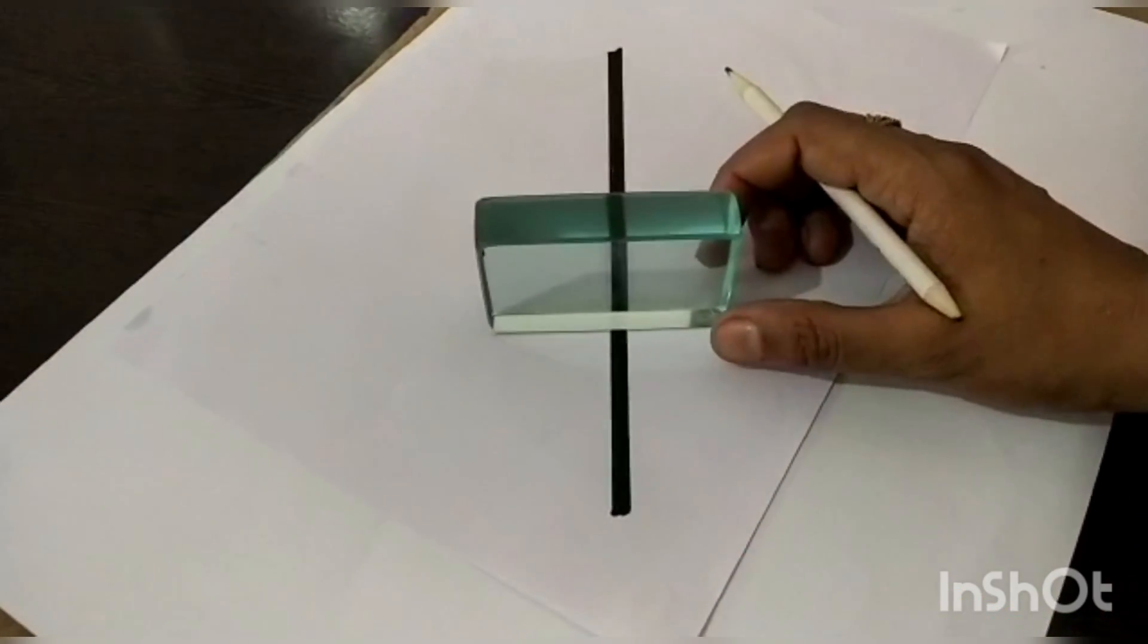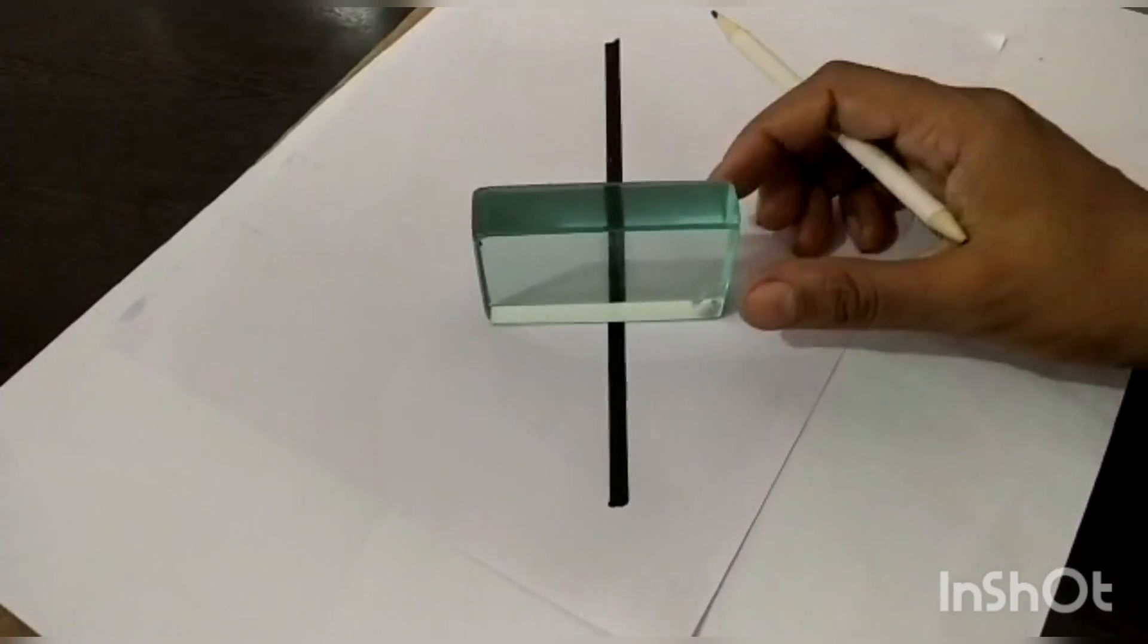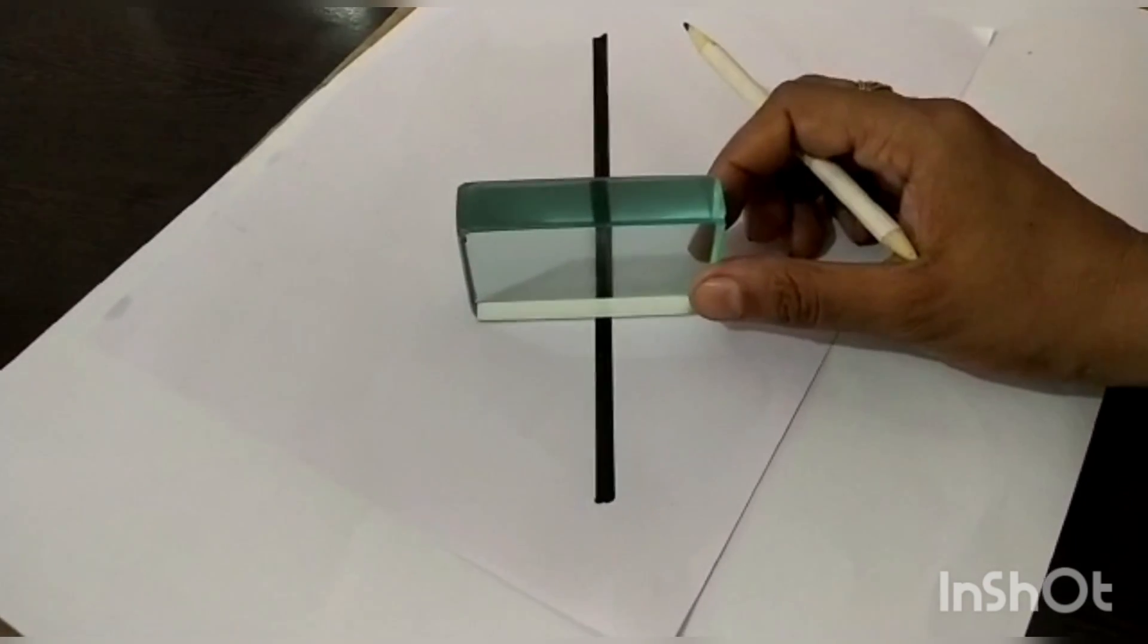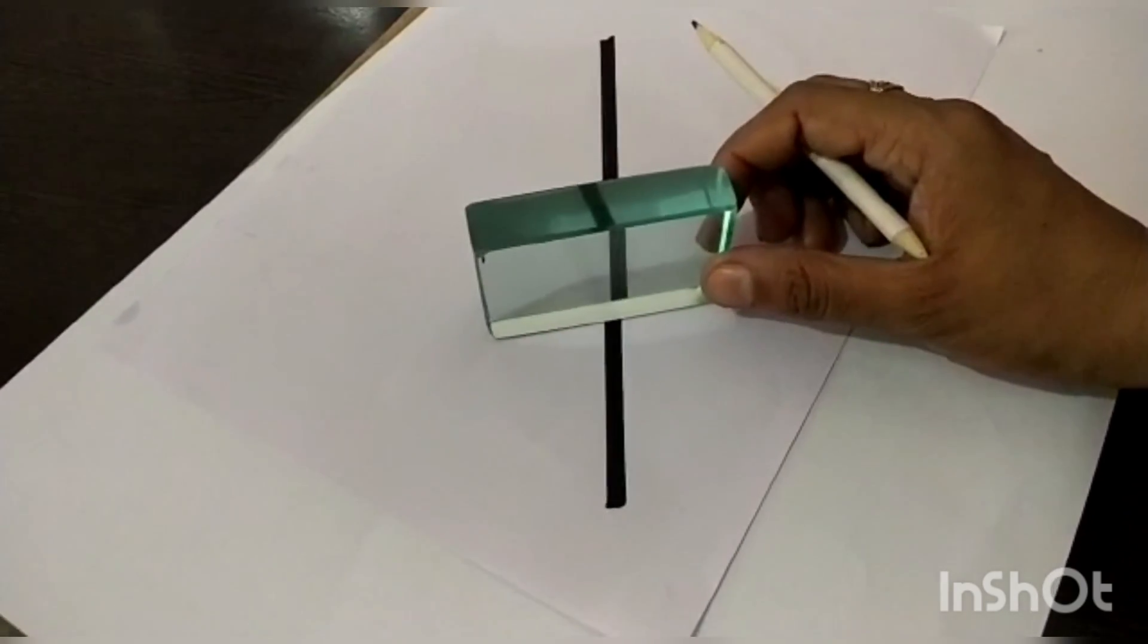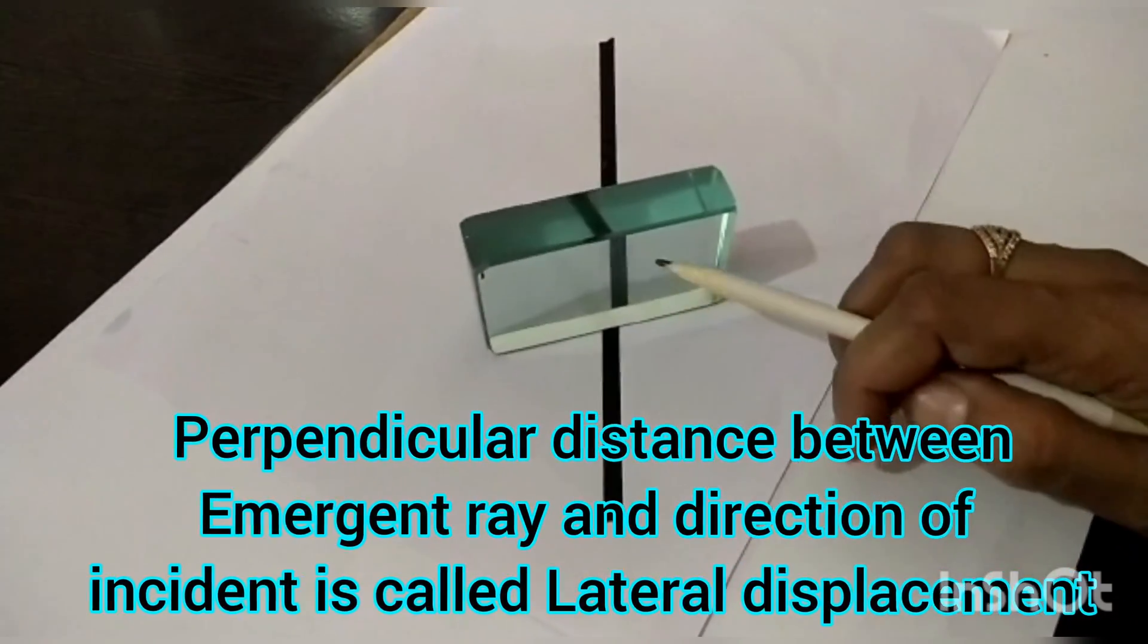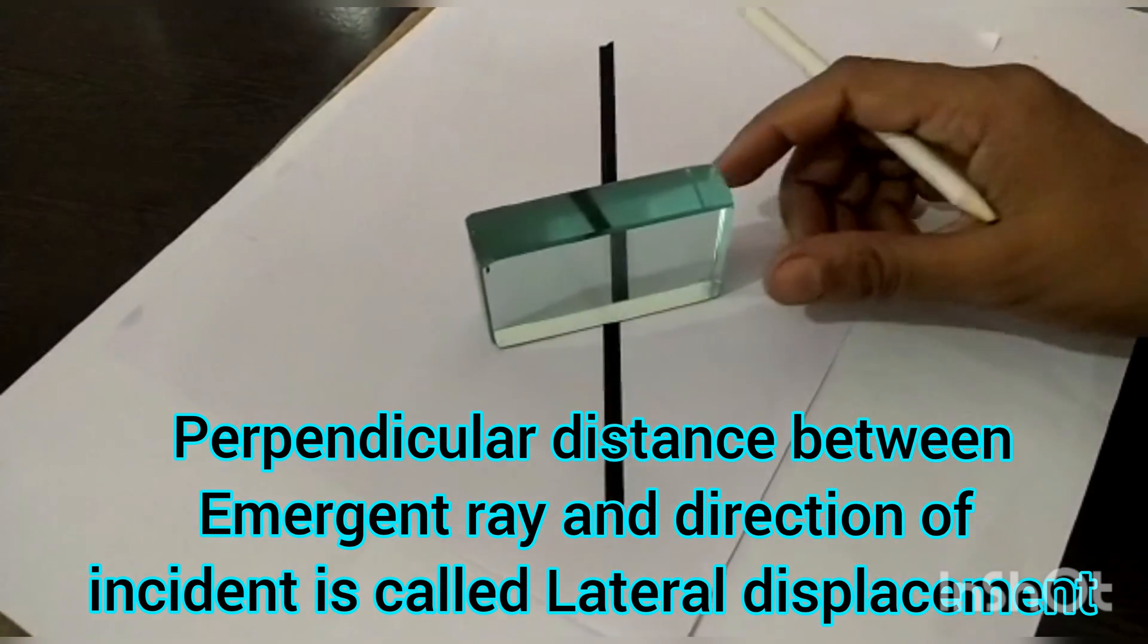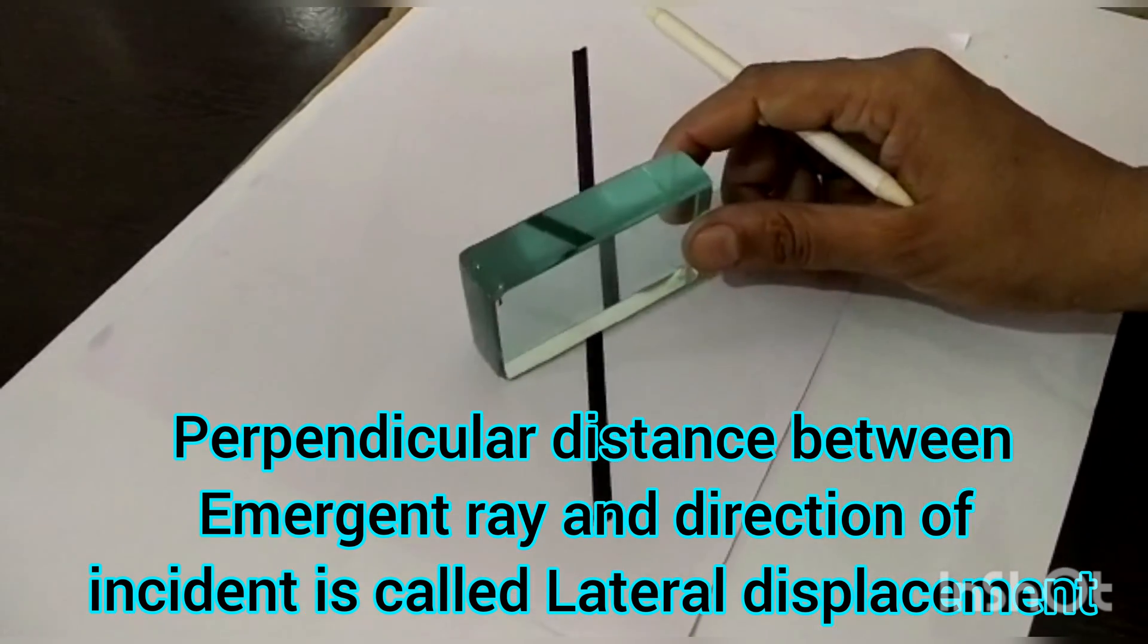But if I increase the angle of incidence, we can see that this refracted ray is shifted towards the right inside. If I increase the angle more, the lateral shift is more.